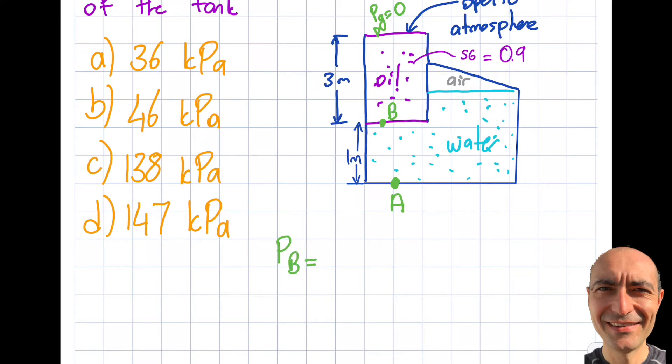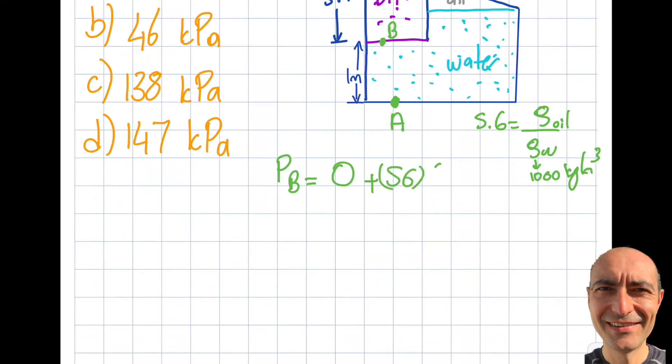So my PB will equal zero (gauge pressure at the surface) plus ρ of oil times gravity times height. Now I'm stuck because ρ of oil is not given, but I have my reference manual. There's a formula specified: specific gravity equals ρ over ρ of water. Right beside it, you'll see that the density of water is given as 1000 kg/m³. So I can obtain the density of oil as the specific gravity times the density of water.